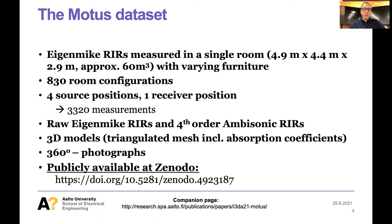Since the measurements were done with the eigenmic, we have 32 microphones and room impulse responses at all 32 capsules. Alternatively, we also included the fourth order ambisonic encoding into the dataset. For every room configuration we modeled the room as a 3D triangulated mesh including absorption coefficients. Additionally, we have 360 degree photographs of every room configuration. The whole dataset is available on Zenodo, packaged into smaller parts, and there is also a smaller 'best of' version for quickly testing ideas.